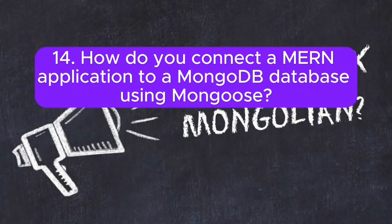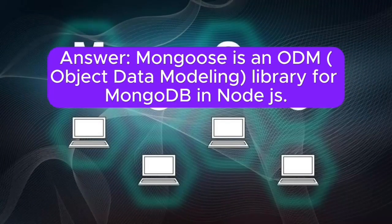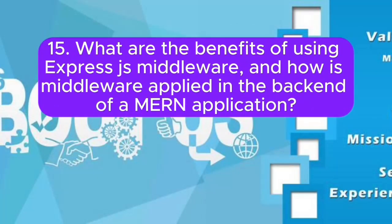14. How do you connect a MERN application to a MongoDB database using Mongoose? Answer: Mongoose is an ODM (object data modeling) library for MongoDB in Node.js. To connect a MERN application to MongoDB, you use Mongoose to define data models, establish a connection, and perform database operations.